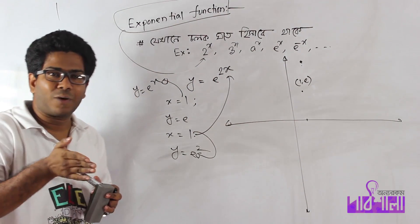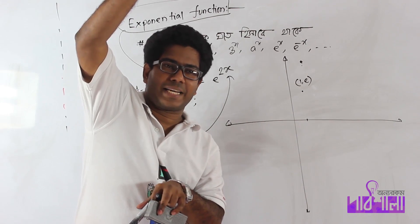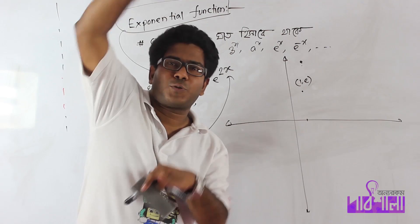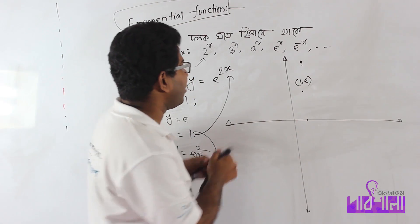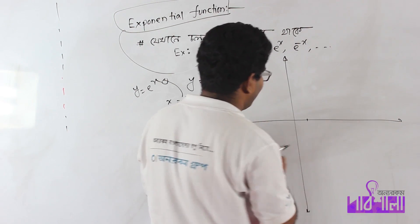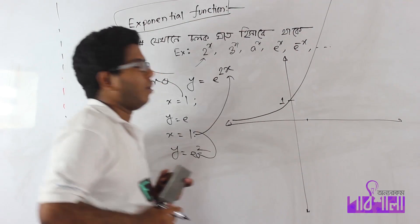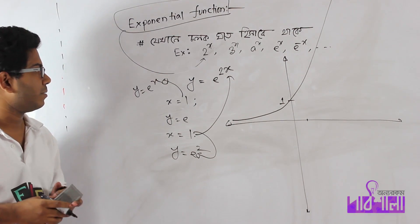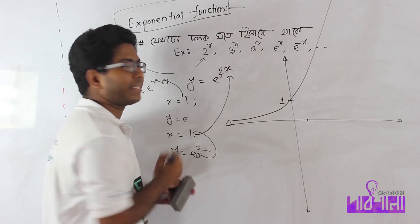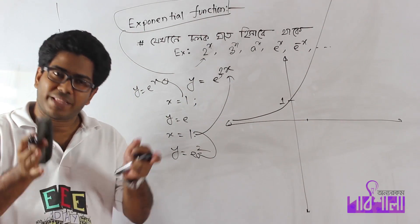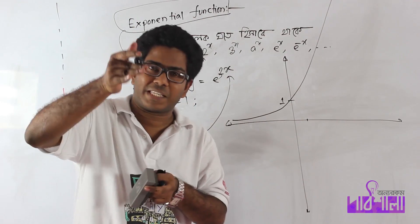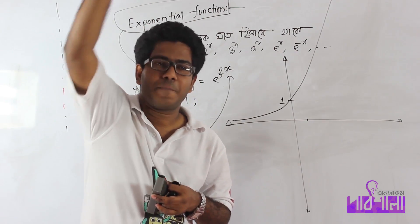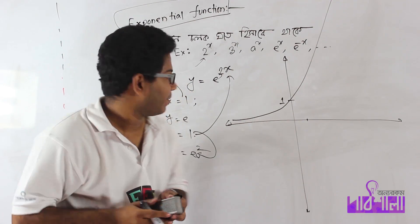You will see the same graph, but the rise is not instantaneous. If you have a graph, the graph will touch the graph. The data is 1 and the graph will be the same. If you say e to the power 3x, everything will be the same. If you say e to the power 4x, then the graph will be the same.